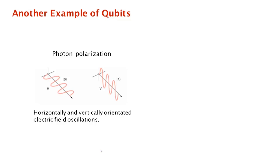Here's a semi-classical interpretation. Light is electromagnetic radiation, so you think of it as being carried by an electromagnetic wave. The light is moving in one direction, and the electric field oscillates in the orthogonal direction. It can be oriented horizontally or vertically. We think of horizontal orientation as the polarization state |0⟩, and if the oscillations are vertical, the state is |1⟩.